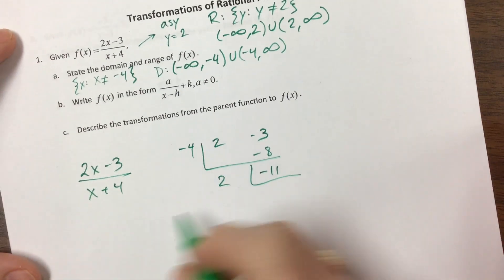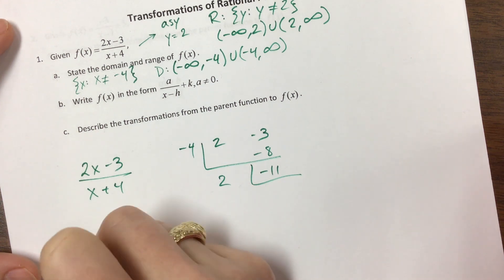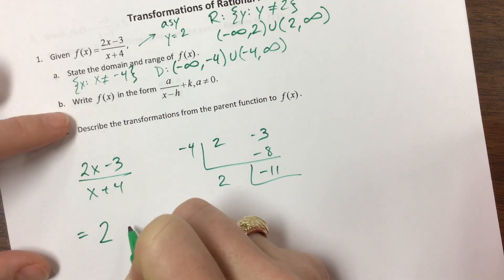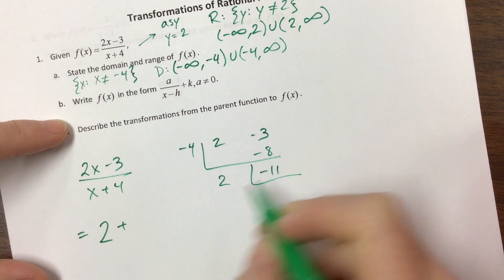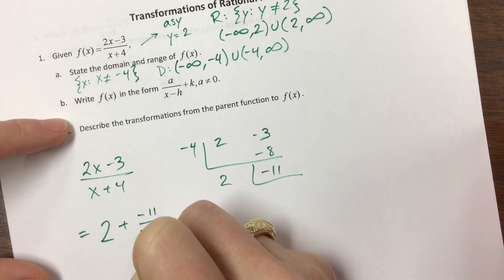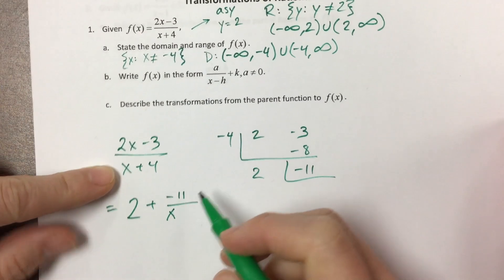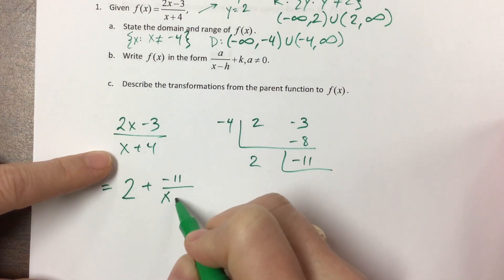So when I divide this, what I end up getting is this is equal to 2 plus, well, negative 11 over, what did we divide by? We divided by, oh sorry, I'm all over the place. We divided by x plus 4.